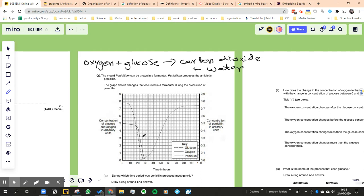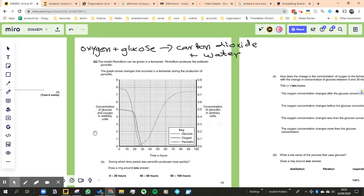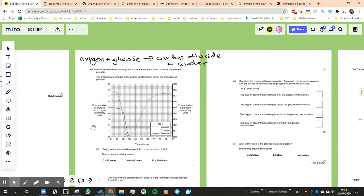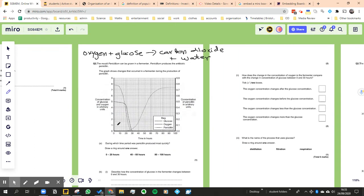You measure the concentration of glucose and oxygen and it's dropping. That's going to be dropping because of the penicillin being produced. And you can see the penicillin is starting to rise. Then it's presumably going to level off there because it doesn't have the oxygen or glucose to feed from.